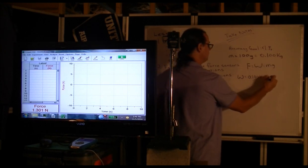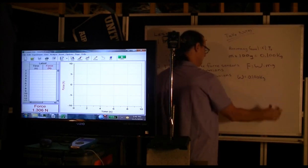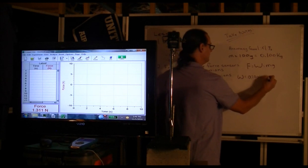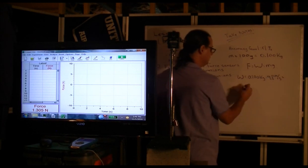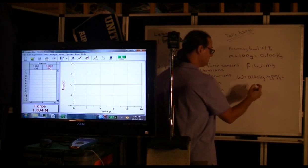And the acceleration of gravity is 9.8 meters per second squared so that the weight, which is the downward force that the hanging mass applies when it's still, is going to be 0.98 newtons.